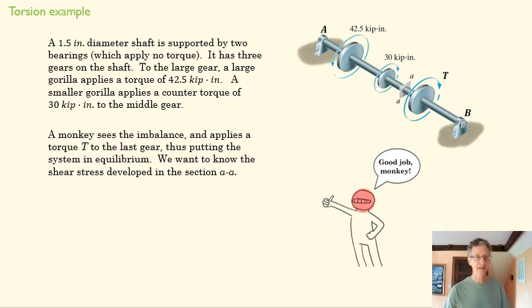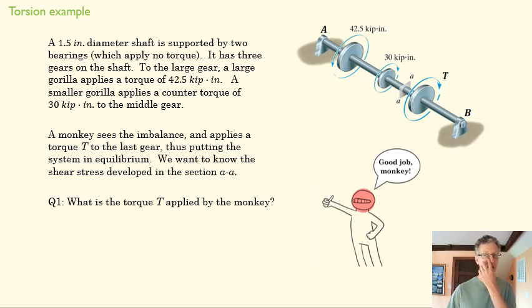So the monkey, after seeing the two gorillas, wants to apply a torque T here that's going to balance this and give us a static situation. But then we'll also start to develop a shear stress within that section A-A. Good job, monkey. He's keeping things in order. So what's the torque applied by the monkey? I'm going to give you a chance to figure that one out. That one's a pretty straightforward little statics problem. Probably do it in your head.